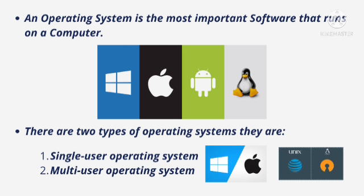A single user operating system is designed for use on one computer by one user at a time. It works on one computer and only one user can use that particular operating system at a time — you cannot use Mac OS and Windows simultaneously. Examples of single user operating systems are Windows 10, Windows 7, and Mac OS, which is the Apple operating system.